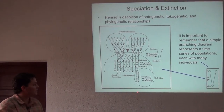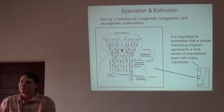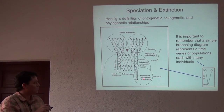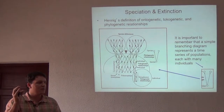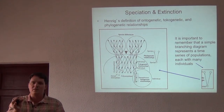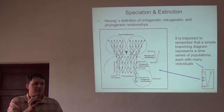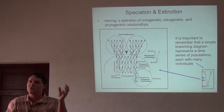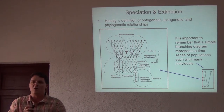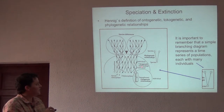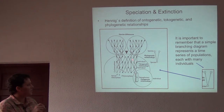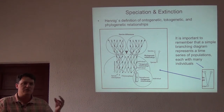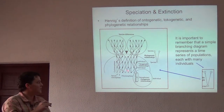Hennig recognized a series of different types of relationships among organisms. First, he recognized what he called ontogenetic relationships, which are the relationships between the juvenile or newborn form of an individual and the adult — the ontogenetic relationships among those individuals across time. He recognized the tokogenetic relationships, shown here by arrows of individuals interacting in the same population, in that same lineage, which is a series of ancestor-descendant populations through time.